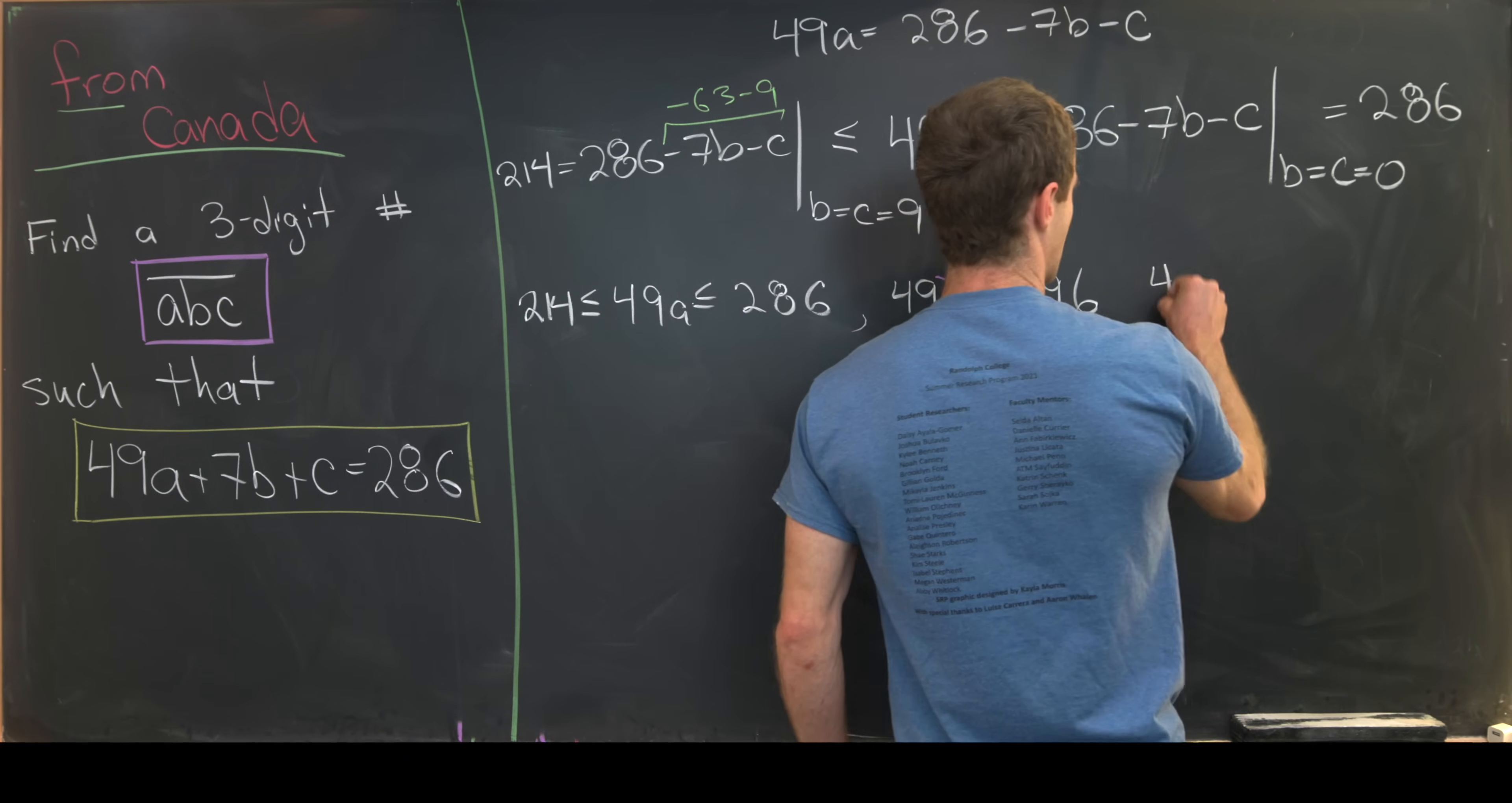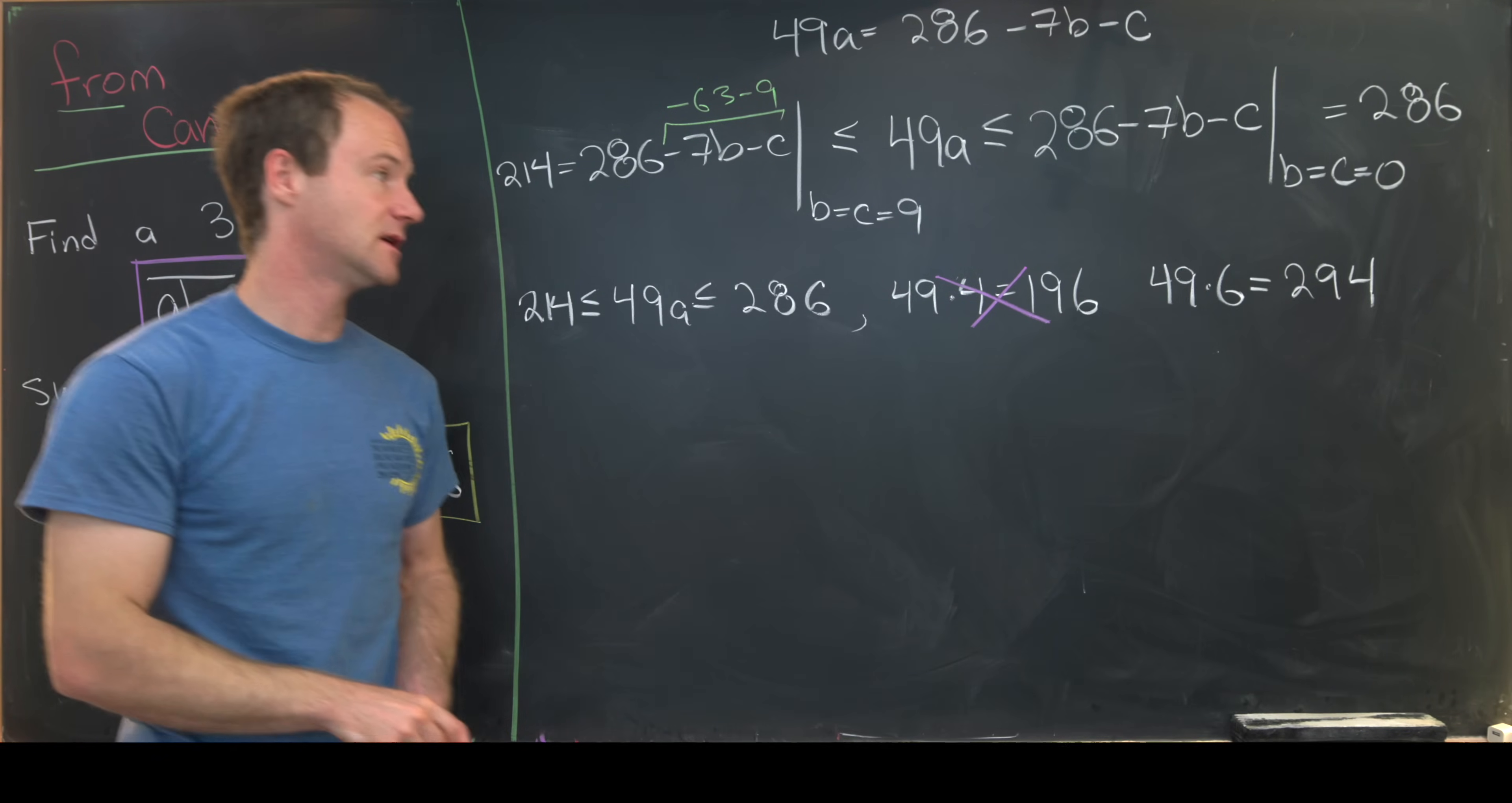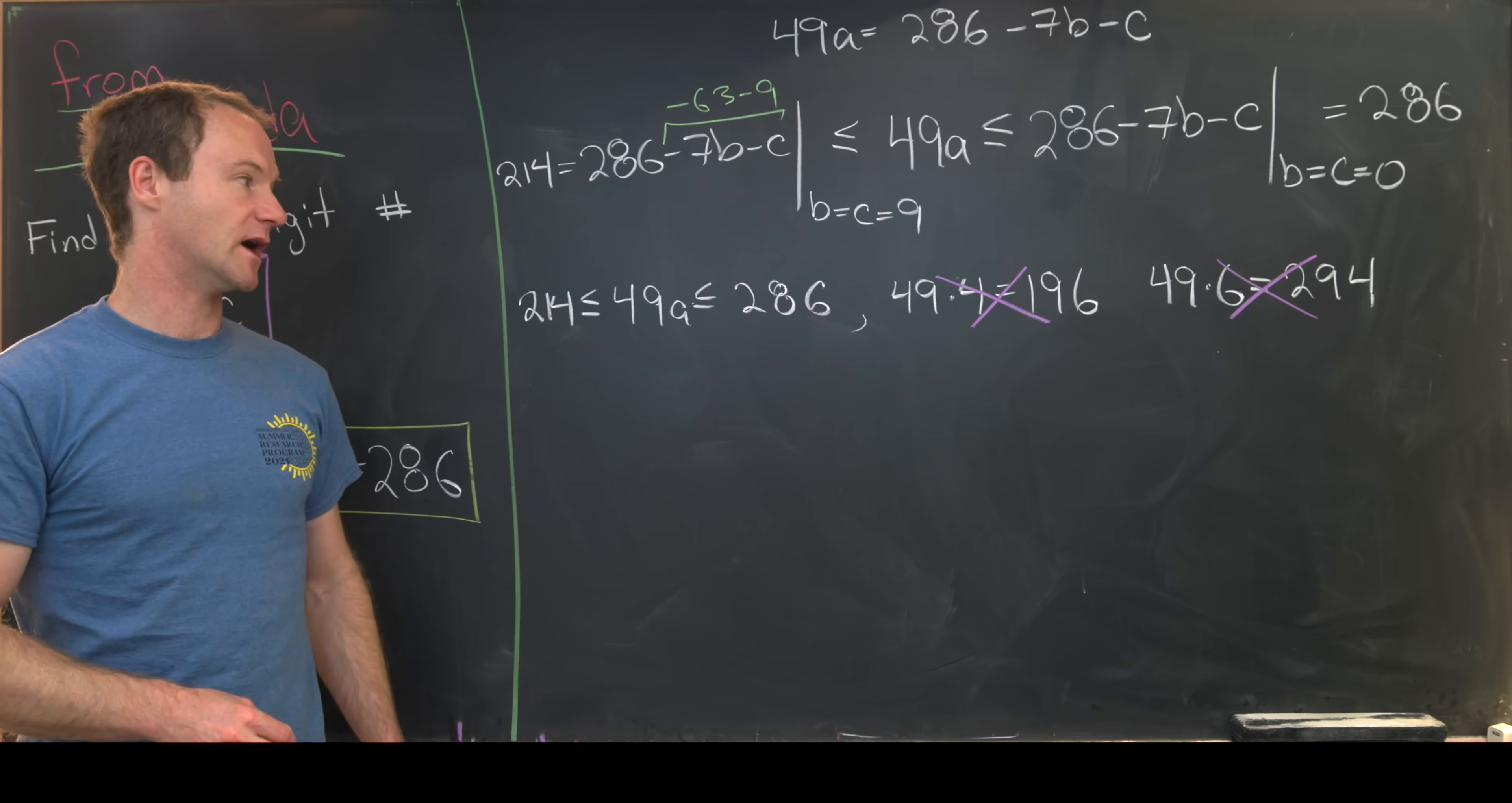Now let's look at 49 times 6. And in this case, we're going to get 294. And again, 294 is too big. It is bigger than 286. So that means we get an impossibility there as well.